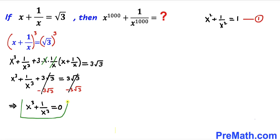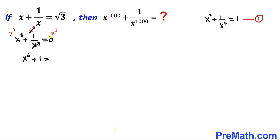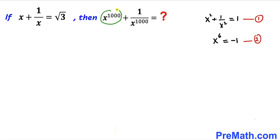Examining the equation x³ + 1/x³ = 0, we multiply through by x³ to remove the fraction. This gives x⁶ + 1 = 0, so x⁶ = -1. Let's call this equation number 2.